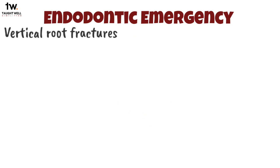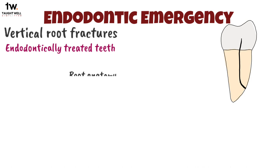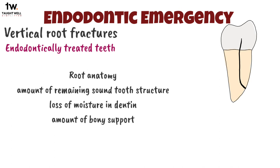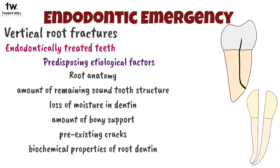Vertical root fractures are longitudinal fractures that originate in the roots of the teeth and, with few exceptions, occur almost exclusively in endodontically treated teeth. Predisposing etiological factors include root anatomy, amount of remaining sound tooth structure, loss of moisture in dentine, amount of bony support, pre-existing cracks, and biochemical properties of root dentin. Bruxism and excessive load on endodontically treated teeth can also cause vertical root fracture. Roots narrower in the mesiodistal dimension are more susceptible, such as those in maxillary and mandibular premolars, mandibular molars, mandibular incisors, and mesiobuccal roots of maxillary molars.